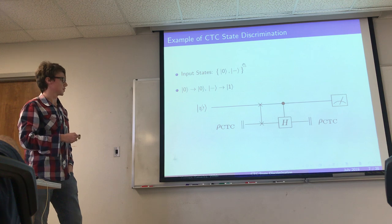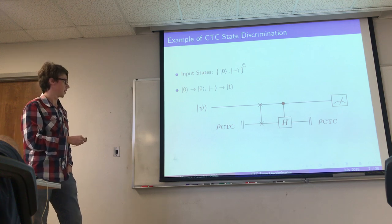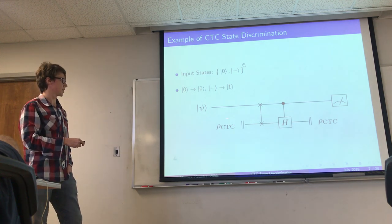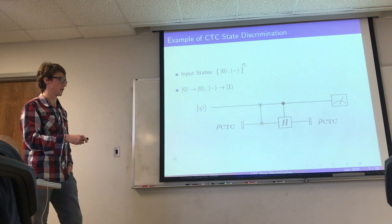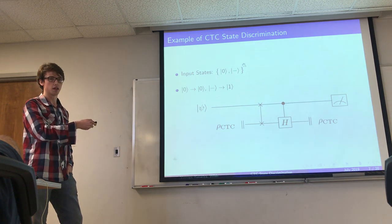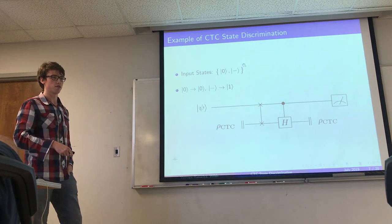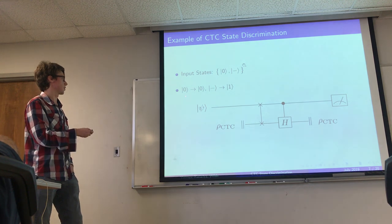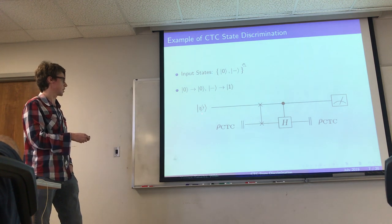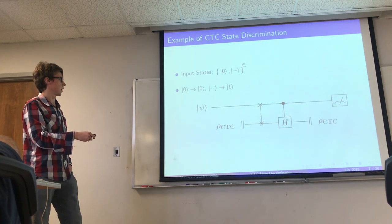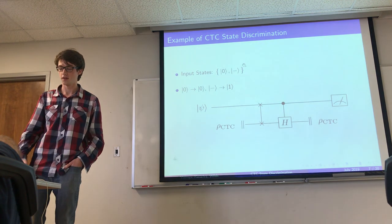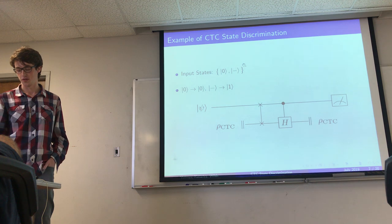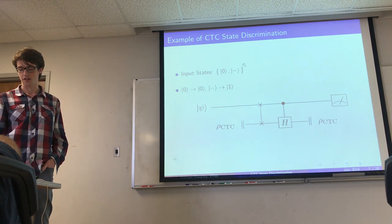You can show that if the input state ψ is |0⟩, the only CTC state satisfying the self-consistency condition is |0⟩, which means you are guaranteed to measure |0⟩. The same holds for the |−⟩ state. Essentially, you can effect a mapping between your input state and the state you measure — a method for state discrimination using a closed timelike curve.